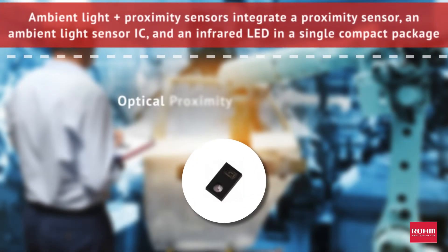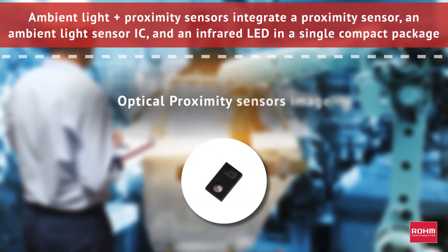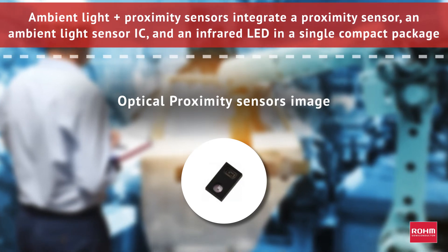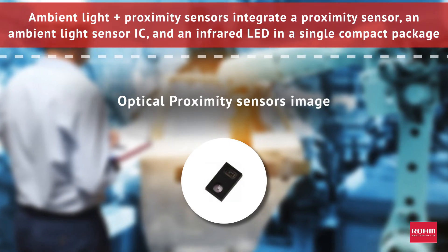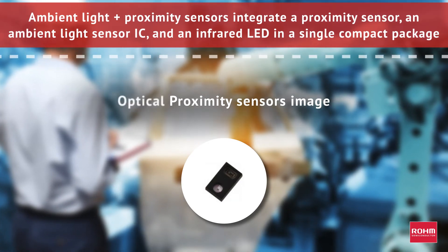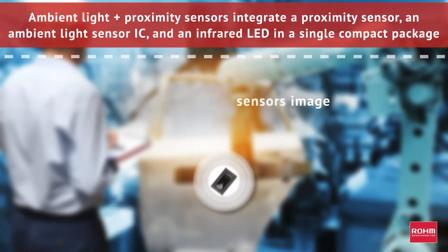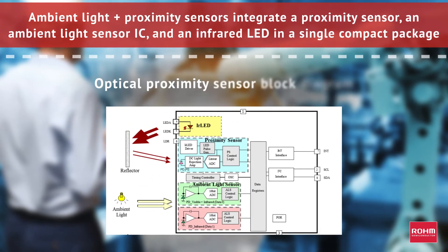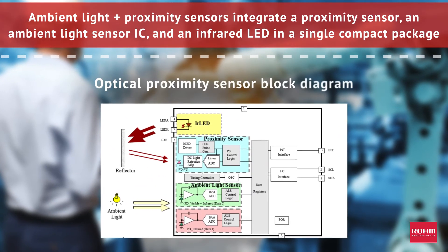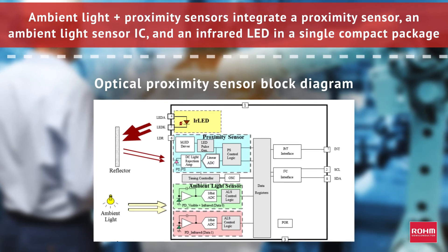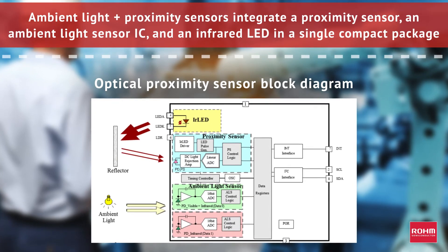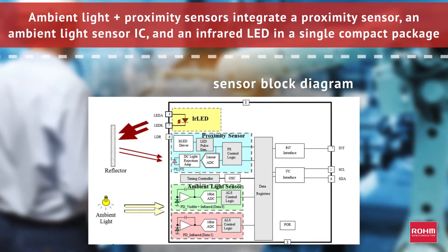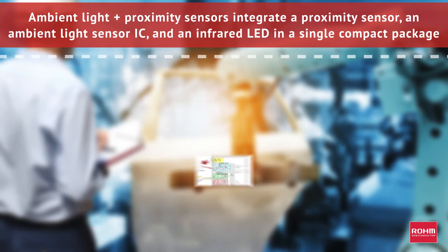Combination ambient light and proximity sensors integrate a proximity sensor, an ambient light sensor IC, and an infrared LED. The proximity sensor detects a person or object approaching by the reflection of infrared light, while the ambient light sensor generates detections at a wide range of illuminations.